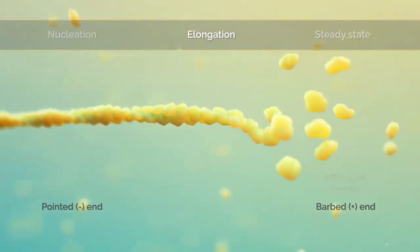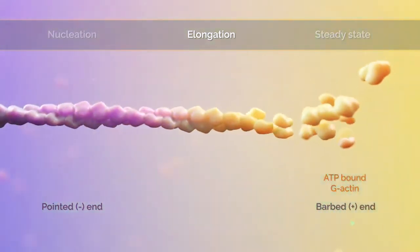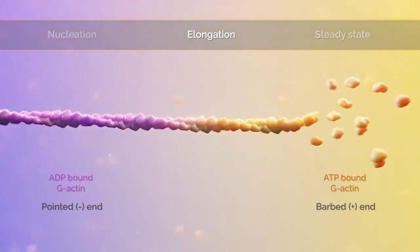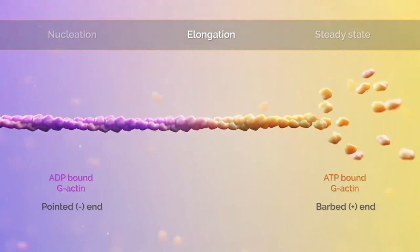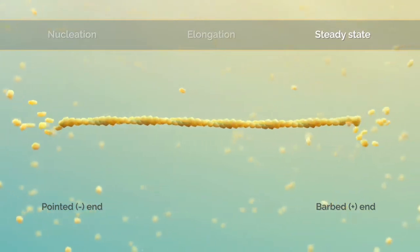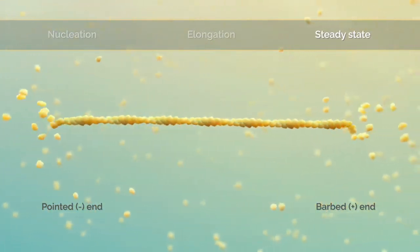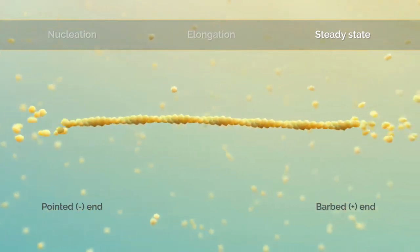Bound G-actin monomers undergo ATP hydrolysis, producing an increase of ADP-bound G-actins at the pointed end of the filament. These G-actins dissociate more readily than the ATP-bound G-actins at the barbed end of the filament. Thus, actin filaments undergo treadmilling. As the reaction reaches a steady state, G-actin monomers are constantly added to the barbed end and removed from the pointed end of the filament.